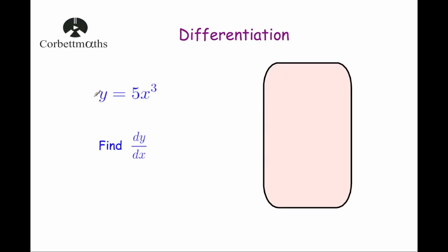Our next example: we've been given y equals 5x cubed and asked to find dy by dx. This is a little different because the x cubed term has a coefficient of 5 — there's a number in front of it. The technique is the same: we bring the power down and multiply. So we bring the 3 down, do 5 times 3, which is 15, then write x and reduce the power by 1 — so it's squared. So if y equals 5x cubed, dy by dx equals 15x squared.